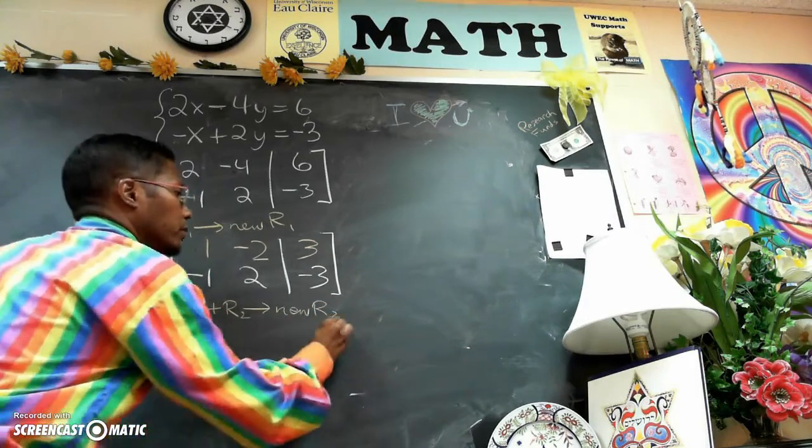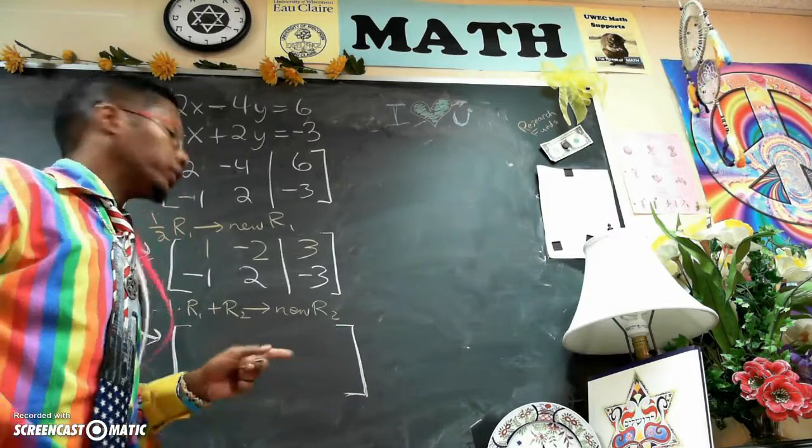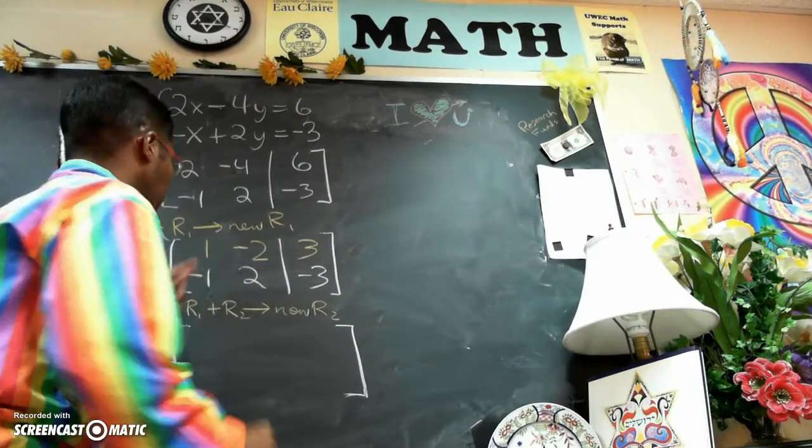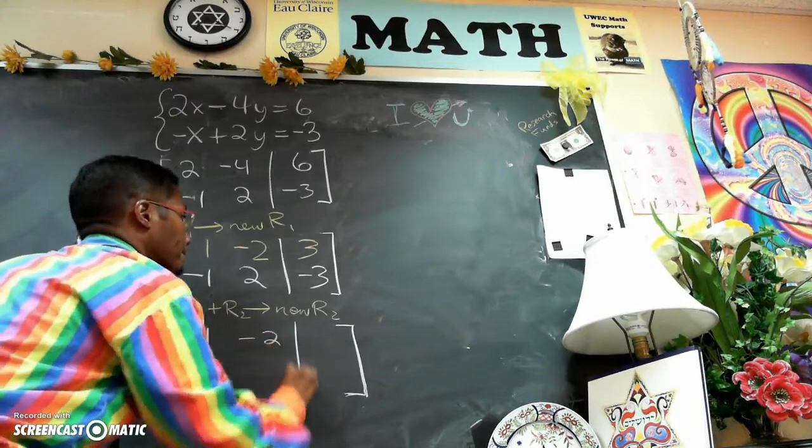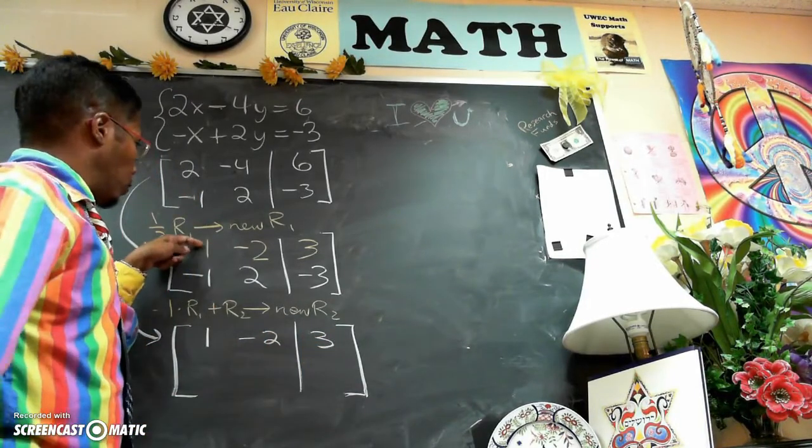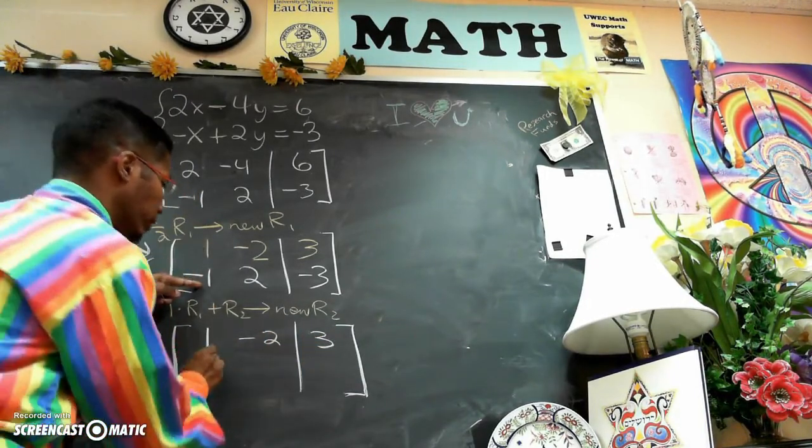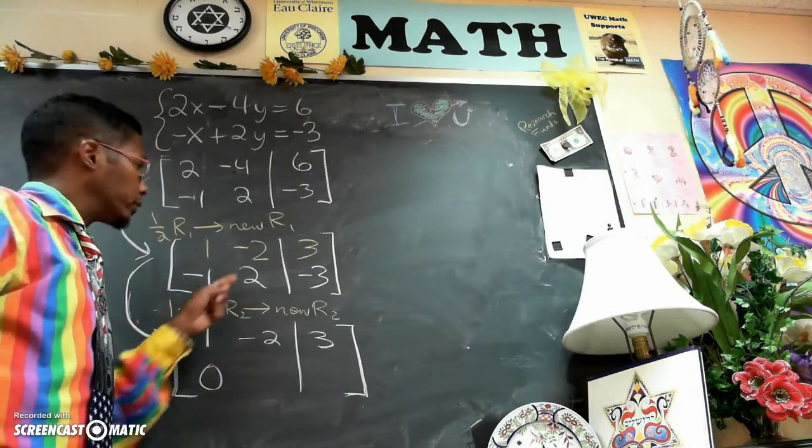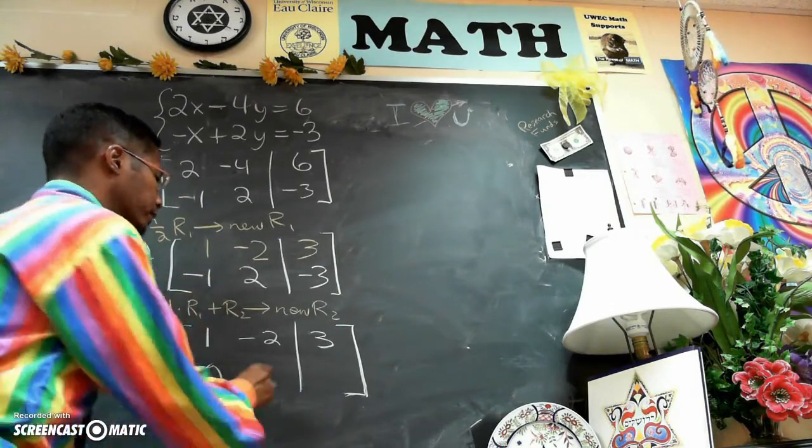So again, since only row 2 is changing, row 1 stays the same. 1 times 1 added to negative 1 is 0. 1 times negative 2 added to positive 2 is 0.